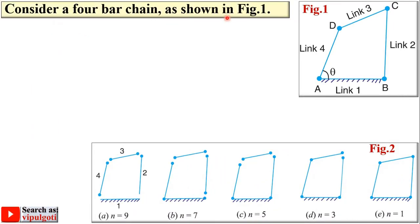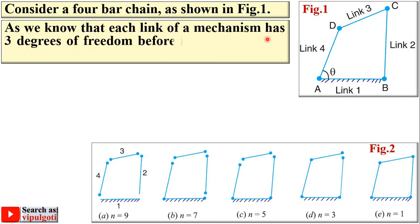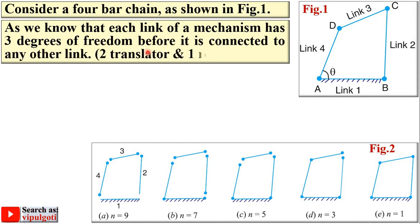Consider a four-bar chain as shown in figure 1. Each link of a mechanism has three degrees of freedom before it is connected to any other link: two translational and one rotational. So if you consider link 4, it can move in the x-axis or y-axis — two translational motions — and one rotational motion about the axis perpendicular to the plane. With three links, the total degrees of freedom is nine.